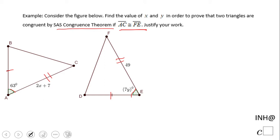Based on that, we can now say that side AC is congruent to FE. In fact, that is even given to us right here. So we get 2x plus 7 equals 49.